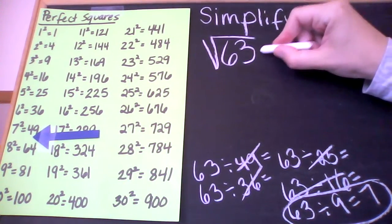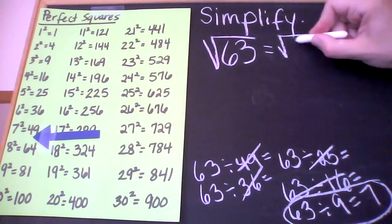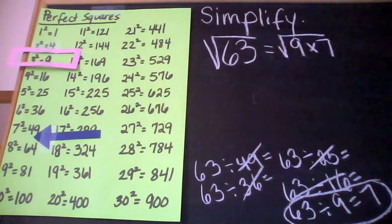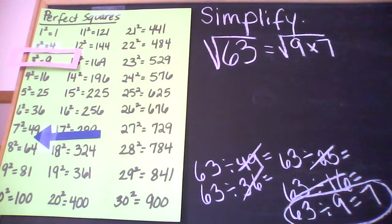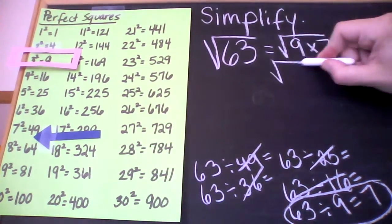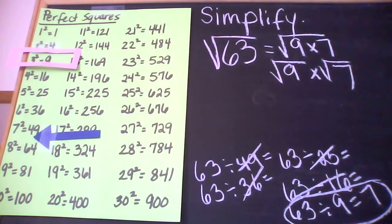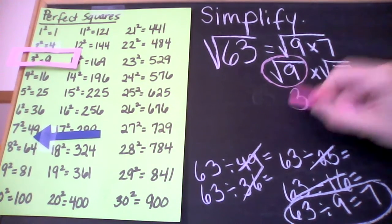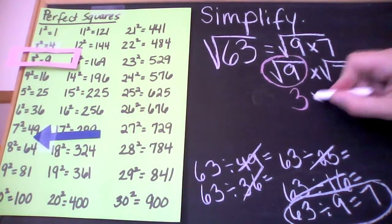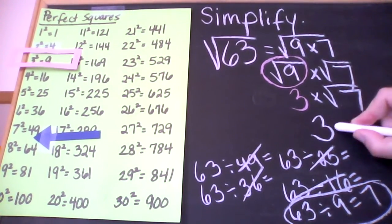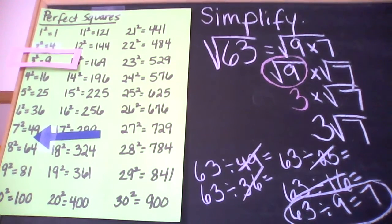So I'm going to factor 63 as 9 times 7, and I'm going to also keep track of my perfect square of 9 over here on the side. Now I'm going to use my product property of square roots and rewrite this as the square root of 9 times the square root of 7. Then I'm going to evaluate my square root of 9. The square root of 9 is 3, because 3 times 3 is 9. I'm going to bring down my square root of 7, and then my last step is to rewrite this without the multiplication symbol. So my answer is 3 times the square root of 7.